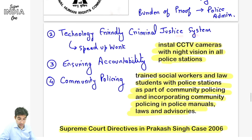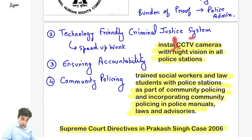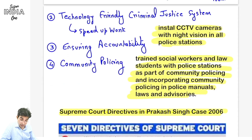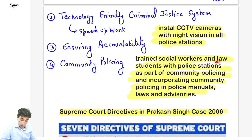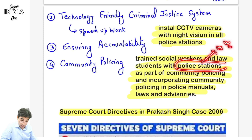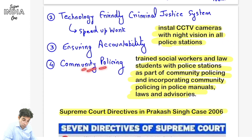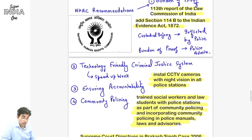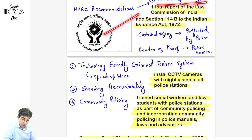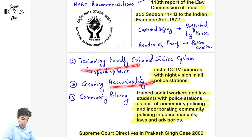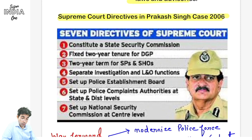So burden of proof - agar kuch custodial injury hui, maana jayega police ne di, aur police usko sabit kare ki nahi di - burden of proof police administration pe ho. Second: technology friendly banana hai criminal justice system ko - jaise CCTNS bhi padha tha. CCTV camera night vision install karein police station mein, accountability set karein. Community policing ki bhi baat ki hai - social workers, law students police ko help karein - because police bhi aksar bahut under-staffed hoti hai.